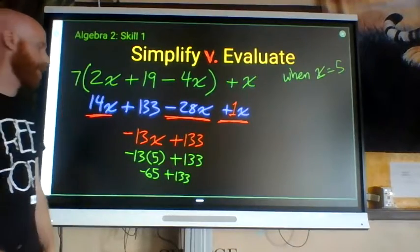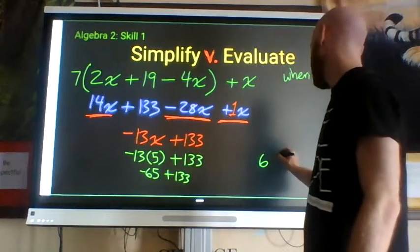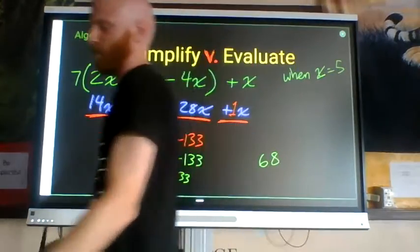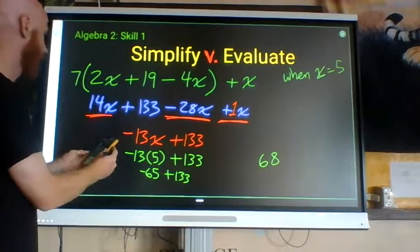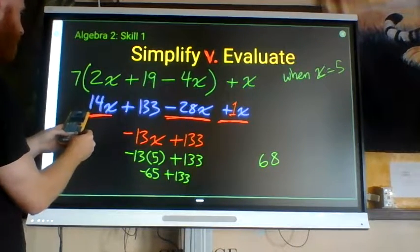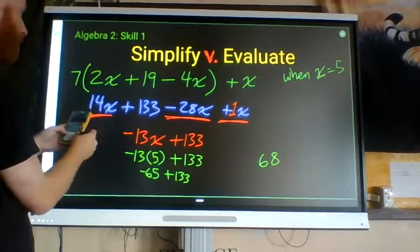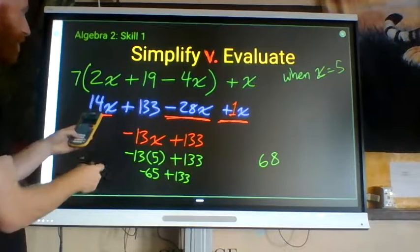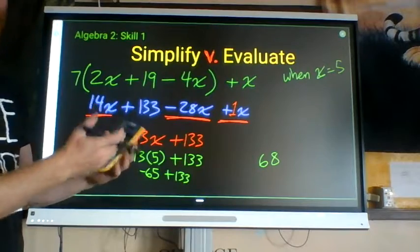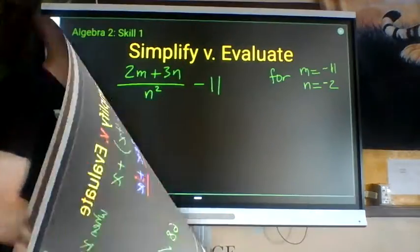Negative 65 plus 133 is positive 68. I can check my final answer with a calculator: type in 7 times parenthesis 2 times 5 plus 19 minus 4 times 5 close parenthesis plus 5, replacing all x's with 5. The calculator gives 68, confirming the answer is correct.